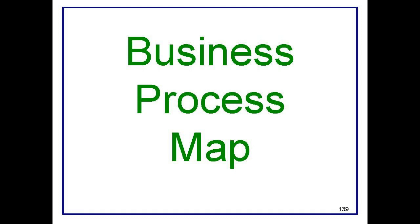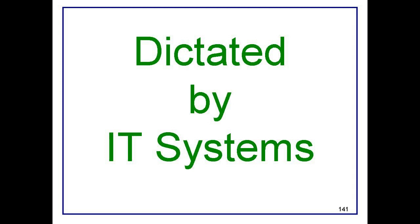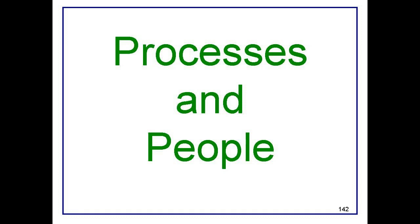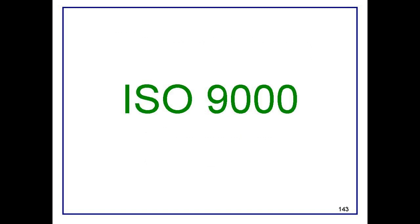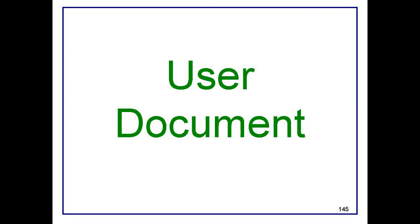The business world is a world of processes, and facilitating those processes is one of the main purposes of IT systems. For many years, business people have been forced to conform to processes dictated by IT systems. Now we are starting to build IT systems that conform to business processes and the people who execute them. Some organizations have ready-made process maps as a result of ISO 9000 work — you can use those maps as a starting point. If there is no process map, then making a map will help people better understand what they are doing. This is a document you prepare with the users.